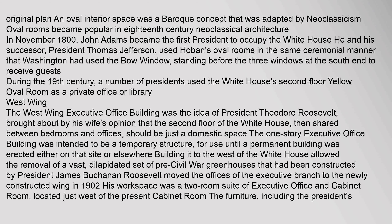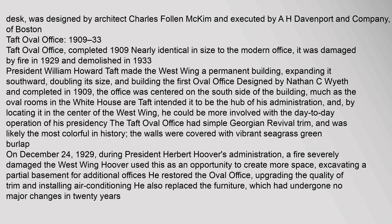The one-story executive office building was intended to be a temporary structure. Building it to the west of the White House allowed the removal of a vast, dilapidated set of pre-Civil War greenhouses constructed by President James Buchanan. Roosevelt moved the offices of the Executive Branch to the newly constructed wing in 1902. His workspace was a two-room suite of Executive Office and Cabinet Room, located just west of the present Cabinet Room. The furniture, including the President's Desk, was designed by architect Charles Fallon McKim and executed by A.H. Davenport & Company of Boston.